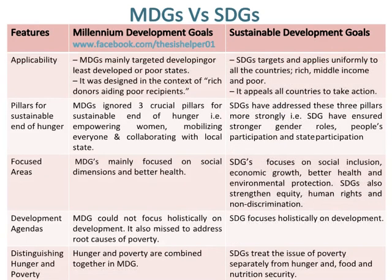Applicability of MDGs mainly targeted developing, least developed, or poor states. It was designed in the context of rich donors aiding poor recipients. Whereas, applicability of SDGs targets and applies uniformly to all countries — rich, middle income and poor. It appeals to all countries to take action.